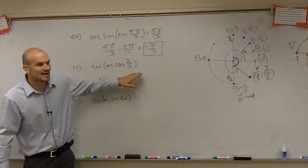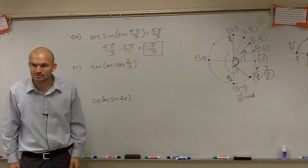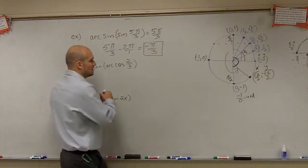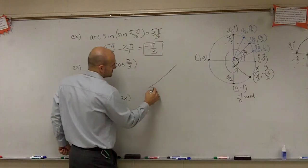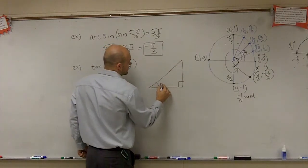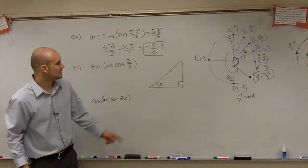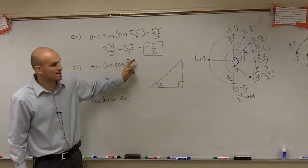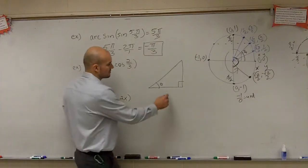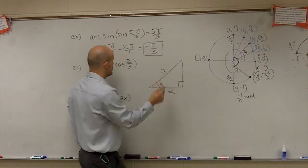What I have right here says the arc cosine of 2/3. So therefore, I can create a triangle. When creating my triangle, cosine represents the adjacent over the hypotenuse — 2 over 3.